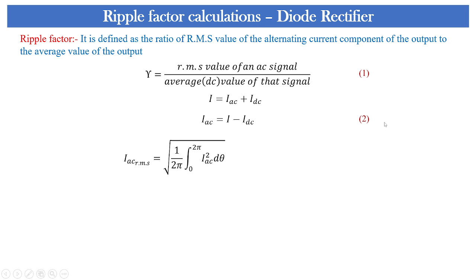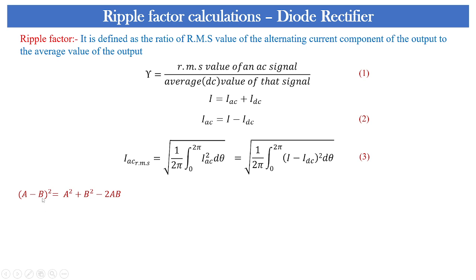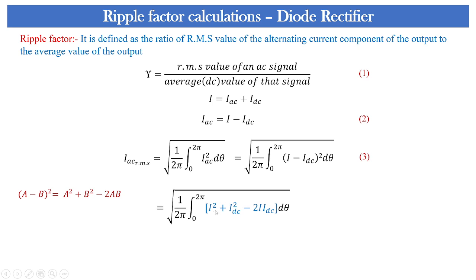We will substitute equation 2 into I_AC², giving us (I − I_DC)² dθ. Equation 3 is in the form of (A − B)², whose formula expands to A² + B² − 2AB. Elaborating equation 3, we get I² + I_DC² − 2·I·I_DC, multiplied by dθ at each term.